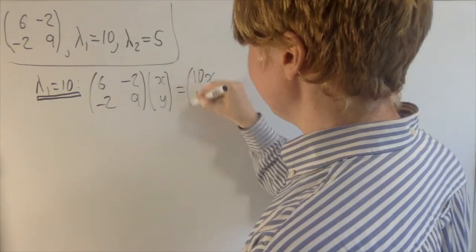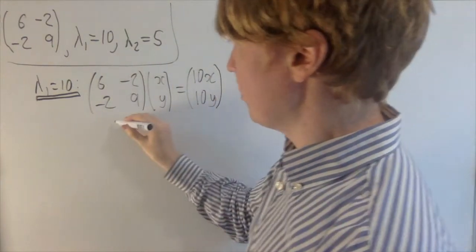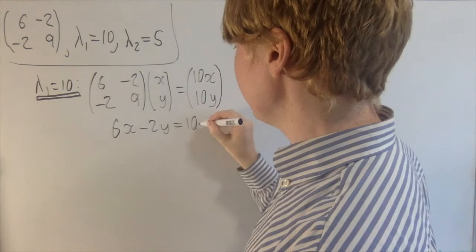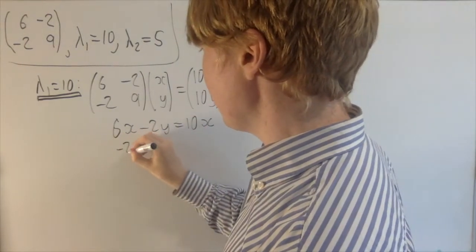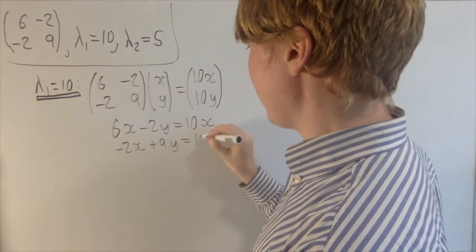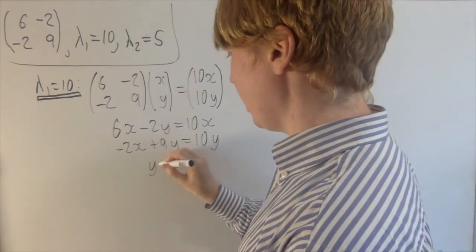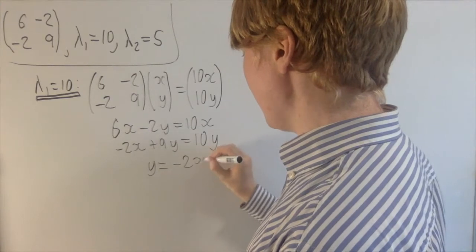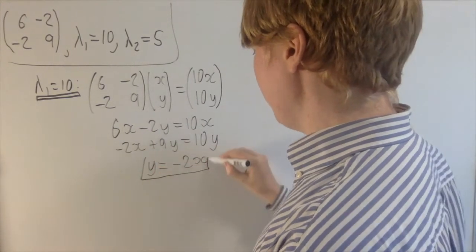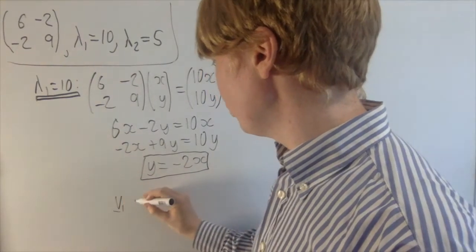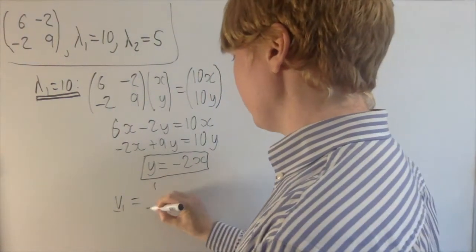And then we'll get two simultaneous equations here: 6x minus 2y equals 10x, and also minus 2x plus 9y equals 10y. And then when we solve these, we'll get y equals minus 2x. So we can have, for example, we could take our eigenvector to be 1, minus 2.